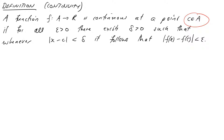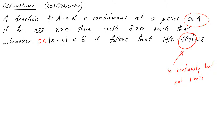At this point we should play a little bit of spot the difference to pick out the key distinguishing features between this definition and that of a limit. First, f(c) appears in this definition. In our limit definition we had a value b, because we didn't make any assumptions about what the function did at c itself — we were just looking at properties of the function as we approach c. So f(c) appears in continuity but not in limits.